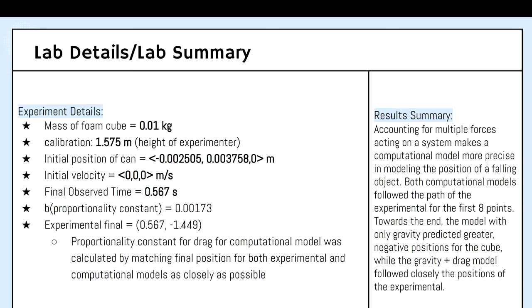Here are some details to the lab, noting that the proportionality constant is 0.00173 and this was found by trial and error by running the computational model with gravity and drag multiple times to see where the last observed position aligns with the last observed position of the experimental. For the results summary, accounting for multiple forces acting on a system makes the computational model more accurate in modeling the position of a falling object.